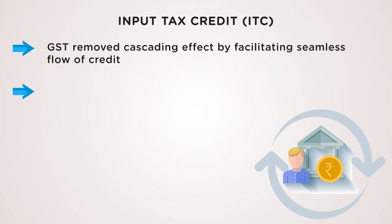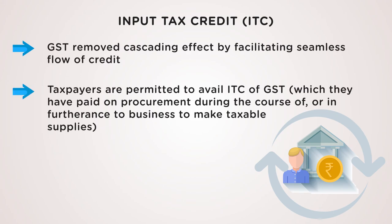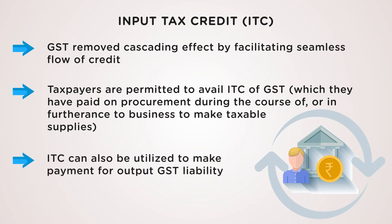The goods and services tax removes the cascading effect by facilitating seamless flow of credit. Taxpayers are permitted to avail the ITC of GST which they have paid on procurement during the course of, or in furtherance to, business to make taxable supplies. The input tax credit can also be utilized to make payment for output GST liability.